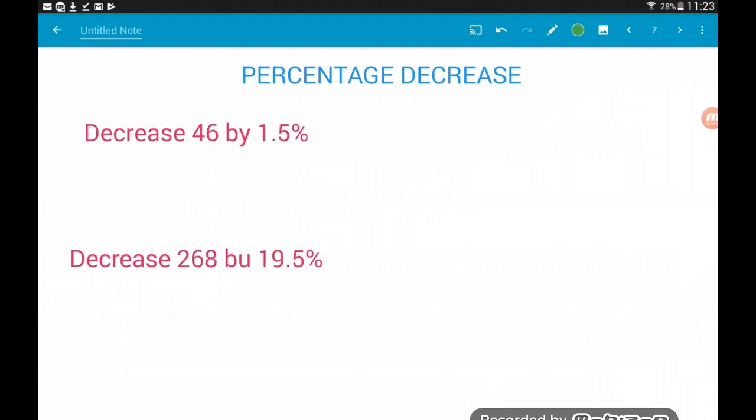Okay so decrease 46 by 1.5%. So 46 is our original 100%. We want to decrease by 1.5%. So we take 1.5% away. Now 100 take away 1.5 is 98.5. So we're finding 98.5%. The decimal equivalent of 98.5% is 0.985. So we do 0.985 times by 46, and that's going to give us 45.31. Again make sure you get the same answer.